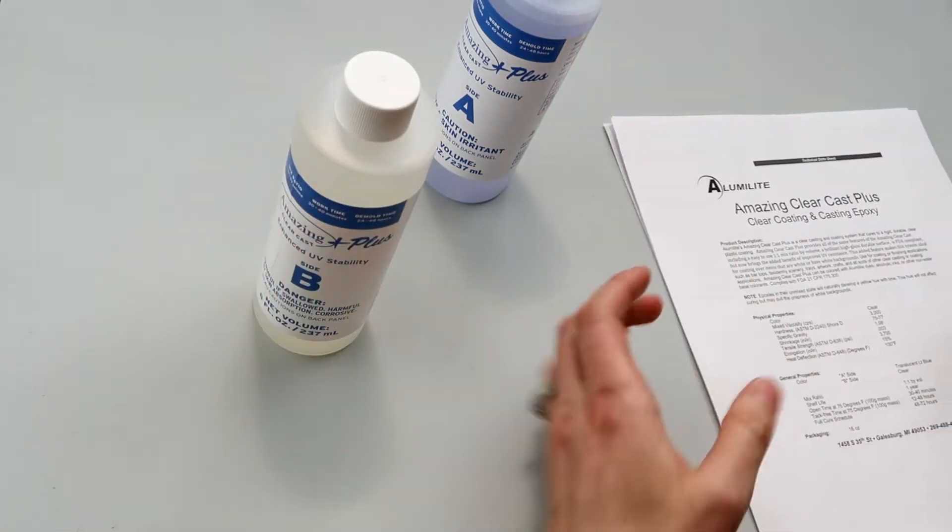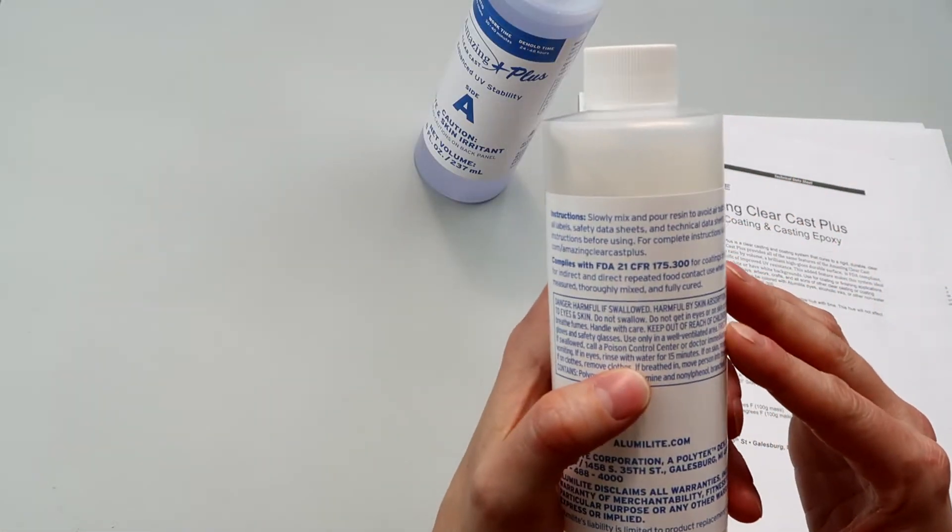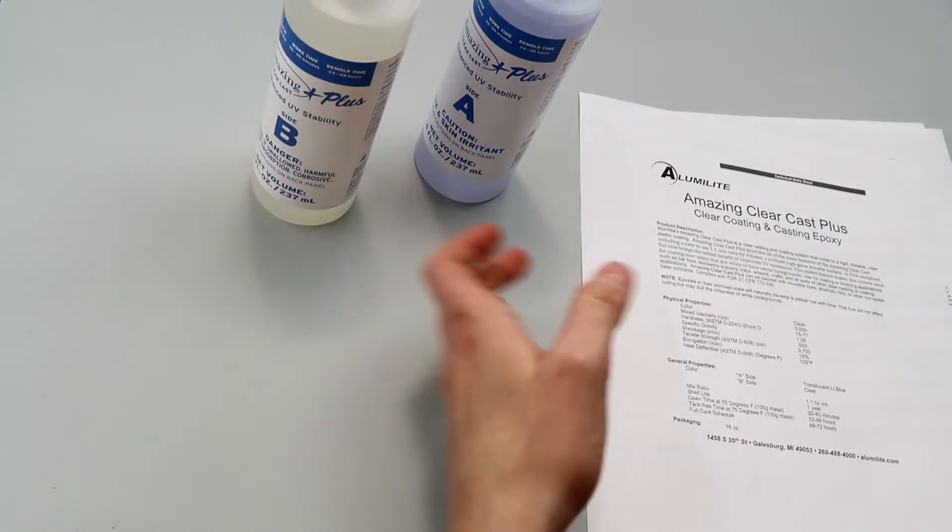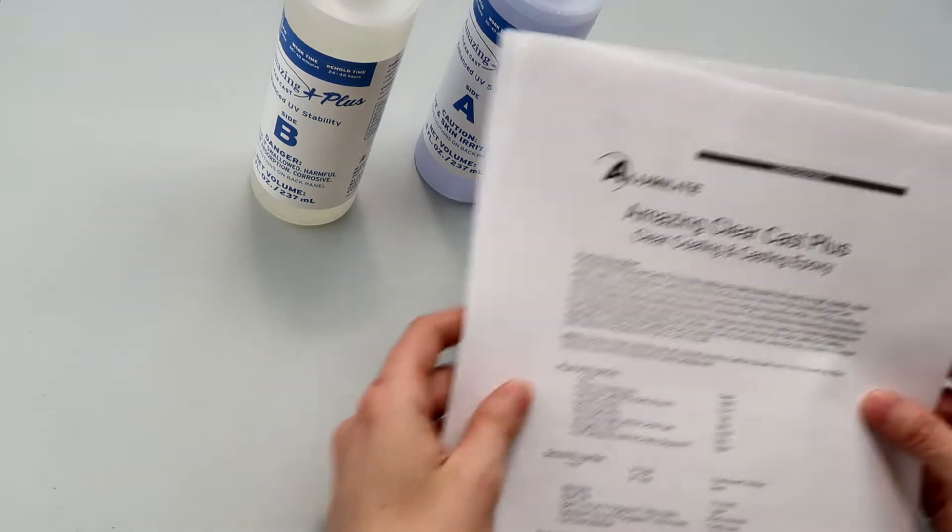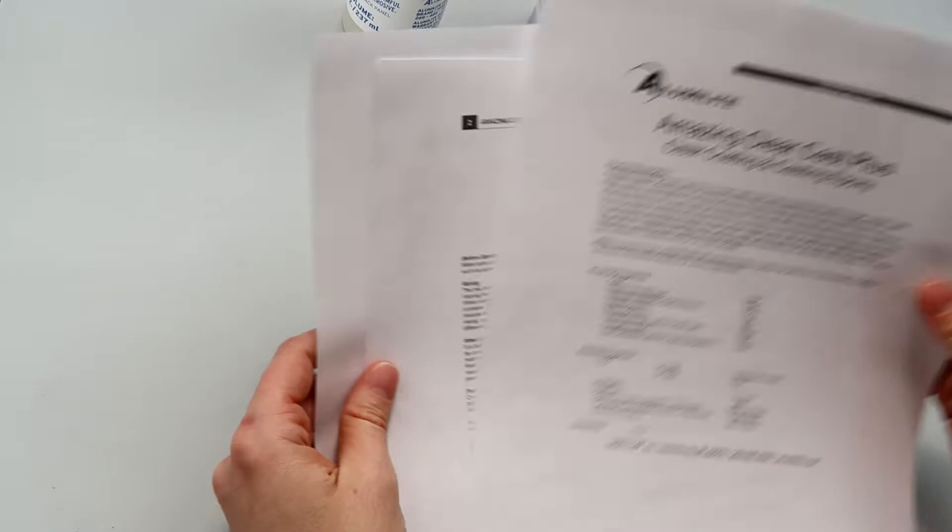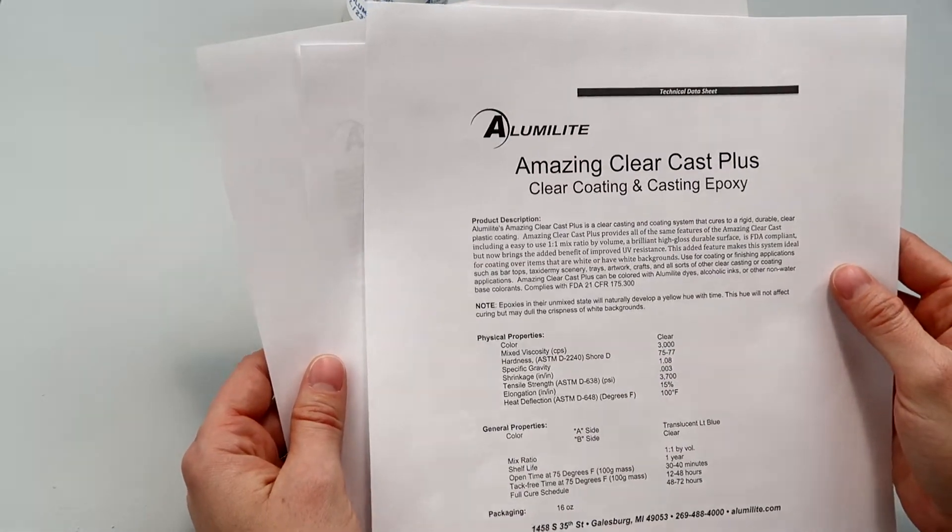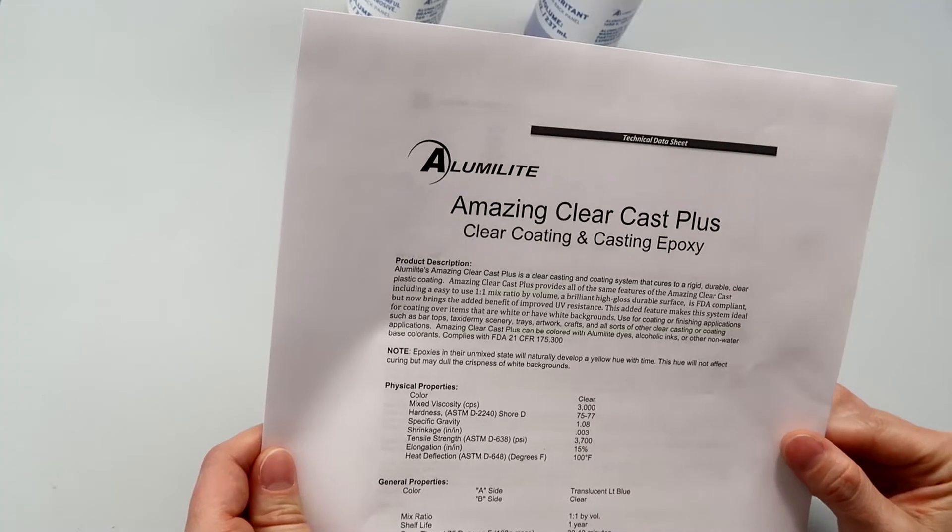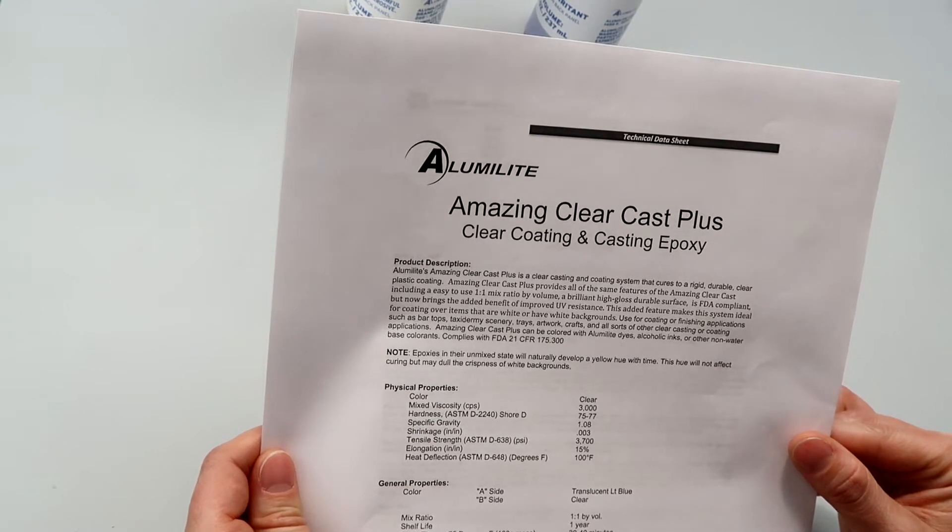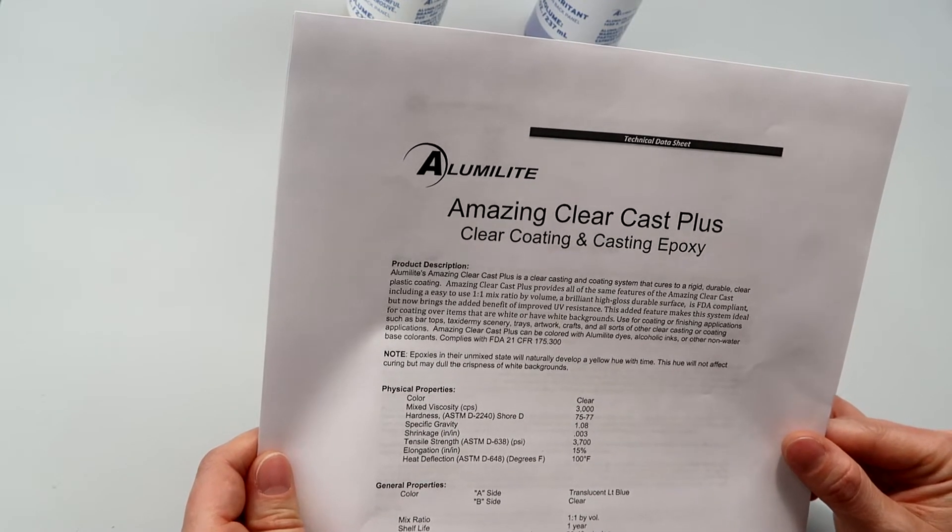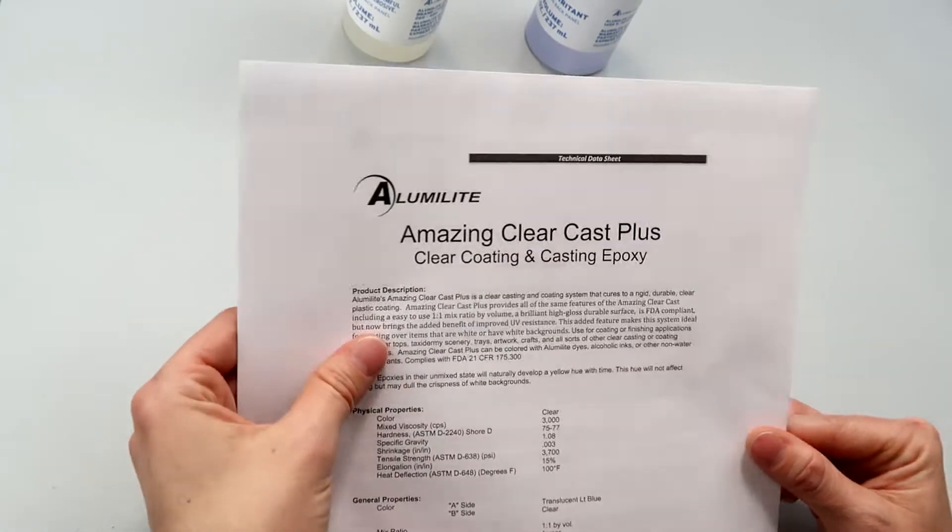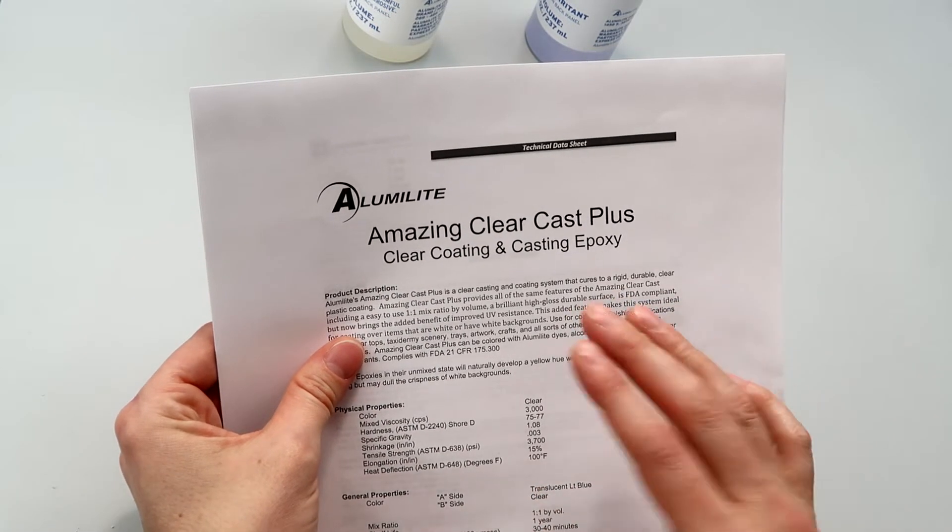So the instructions didn't come with it. There's a little bit written on the bottle but it says for complete instructions visit Alumilite. So I went to the site and printed out the directions. Alumilite Amazing Clearcast Plus is a clear casting and coating system. Cures to a rigid durable clear plastic coating. Amazing Clearcast Plus provides all the same features of Amazing Clearcast including a 1 to 1 mix ratio. I appreciate that it says that it cures rigid.